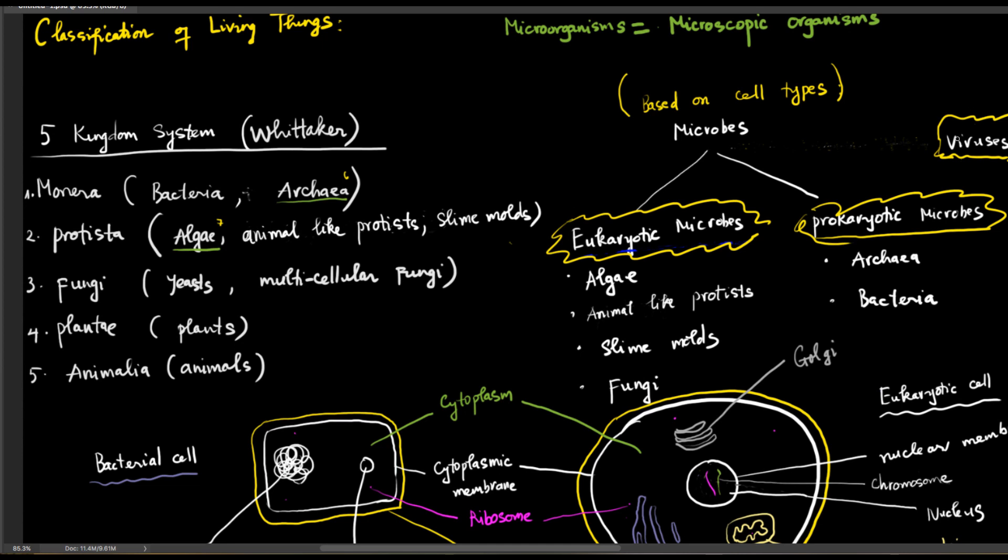Viruses are very tiny, way smaller than prokaryotic and eukaryotic microorganisms. However, they are not living things, so they are not placed under any of these kingdoms. The reason that viruses are not considered living things is because they lack cell structures, and most of all, they can't reproduce by themselves.